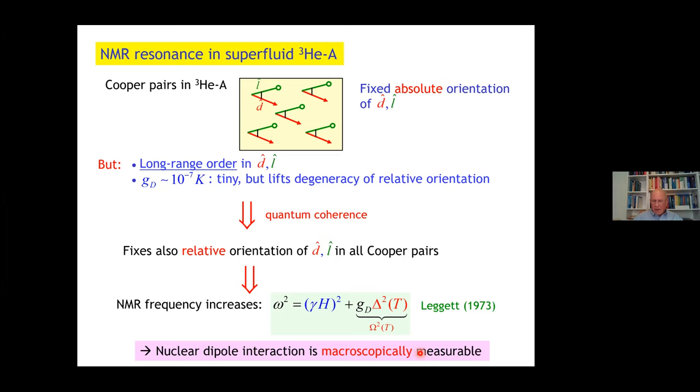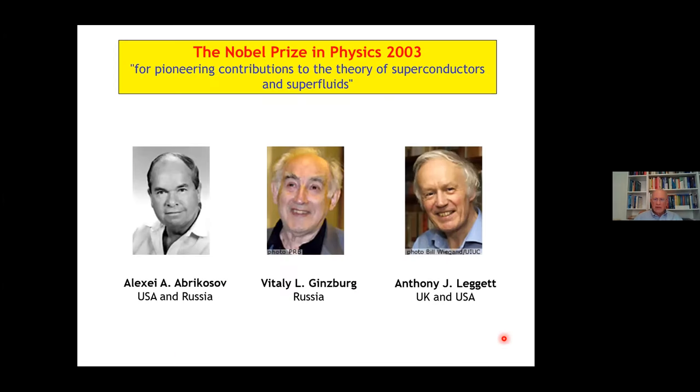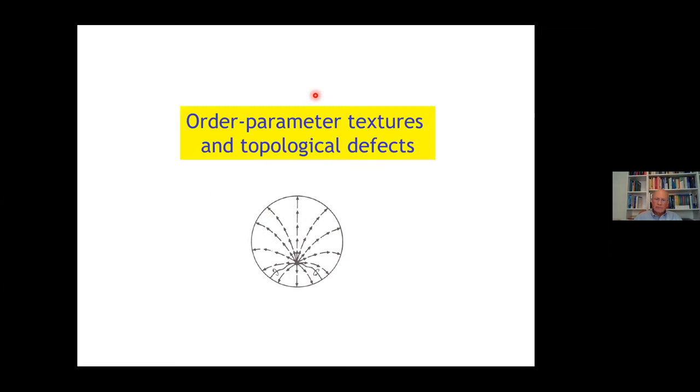Tony Leggett, in a series of brilliant papers, analyzed that. In helium-3, because of the quantum coherence, the tiny nuclear dipole interaction is macroscopically enhanced and is actually measurable. Because of that and many other contributions, he received the Nobel Prize in 2003, together with Abrikosov and Ginzburg for pioneering contributions to the theory of superconductors and superfluids.